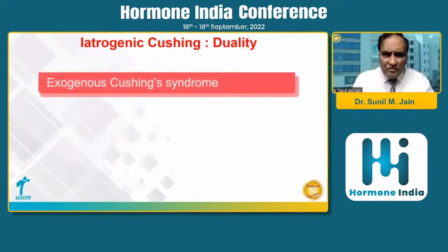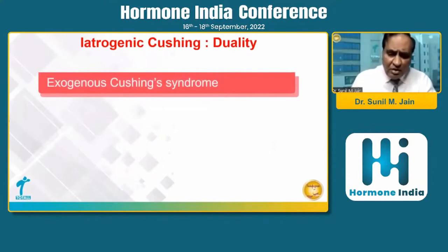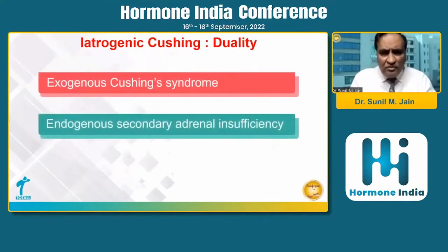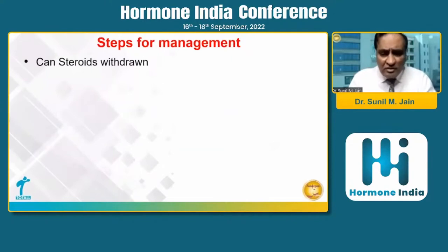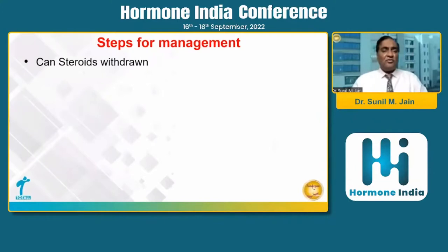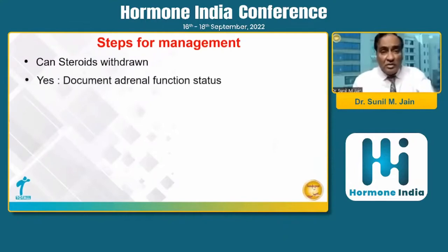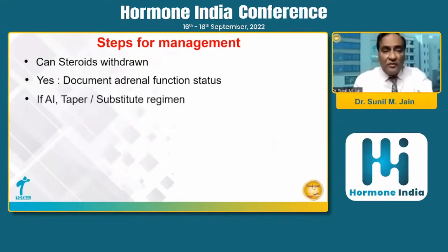An important feature is that iatrogenic Cushing's is a duality — it is a dual disease, because the patient has Cushing's as well as endogenous secondary adrenal insufficiency due to exogenous steroids. Hence, the steps for management are very important. We must first ask: can we withdraw steroids? If yes, we have to follow a protocol for steroid withdrawal, but before that, we have to document the adrenal function.